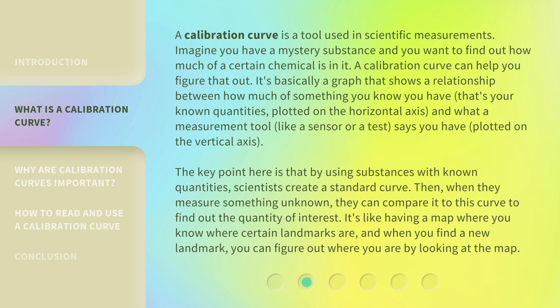The key point here is that by using substances with known quantities, scientists create a standard curve. Then, when they measure something unknown, they can compare it to this curve to find out the quantity of interest. It's like having a map where you know where certain landmarks are, and when you find a new landmark, you can figure out where you are by looking at the map.